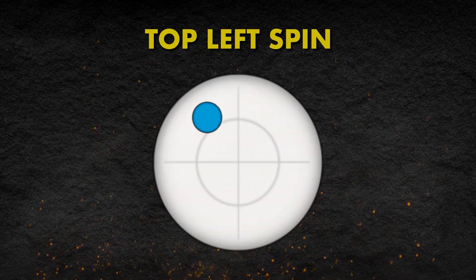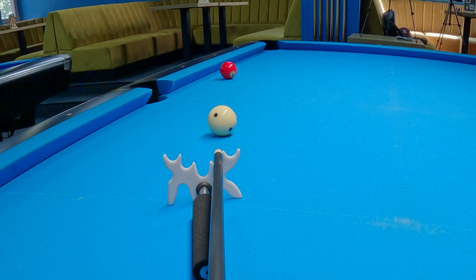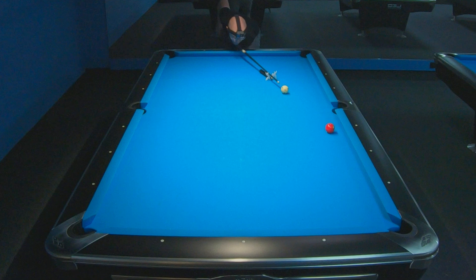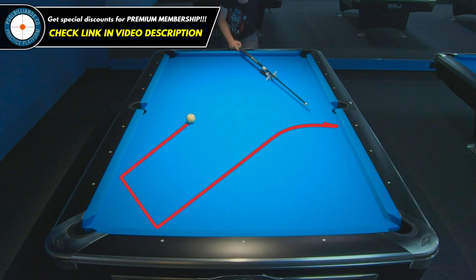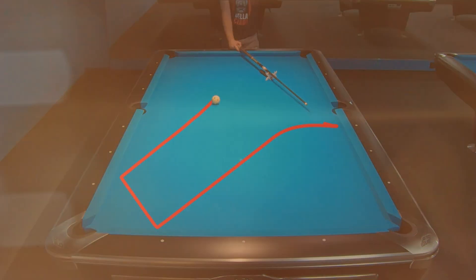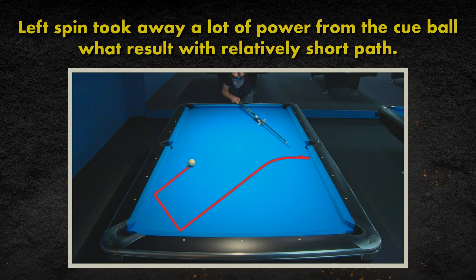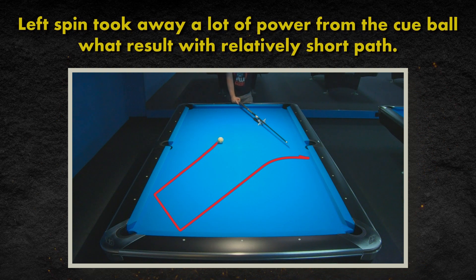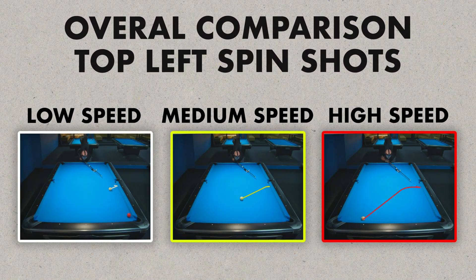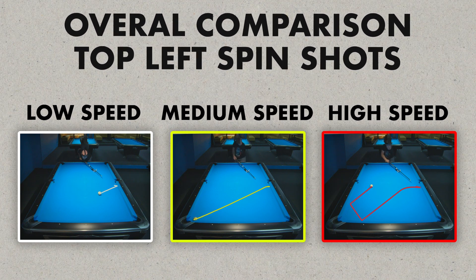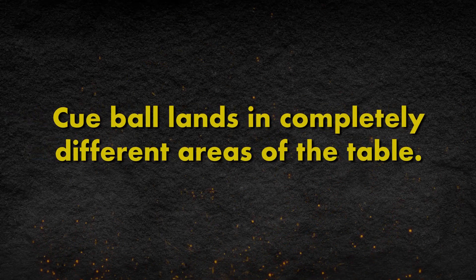The most interesting outcome comes with top left spin at high speed. After contact with the long rail, the cue ball goes practically parallel to the short rail, but then curves significantly and goes towards the bottom short rail. During contact with this rail, the left spin takes away a lot of power, and the cue ball lands in the center area of the table. Comparing all three shots with this spin, we can see a huge difference because in each case the cue ball follows a completely different path and lands in completely different areas of the table.